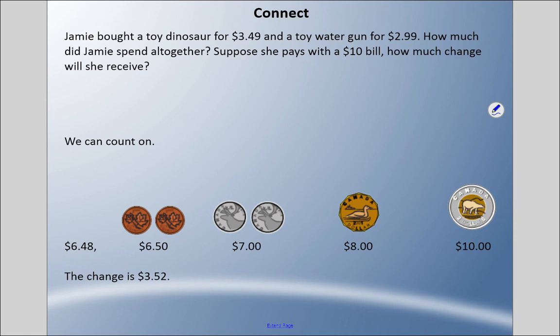Back to that question: Jamie bought a toy dinosaur for $3.49 and a toy water gun for $2.99. How much did Jamie spend altogether? Suppose she pays with a $10 bill, how much change will she receive? We count on. First it was $3.49 plus $2.99. That's $6.48 total.